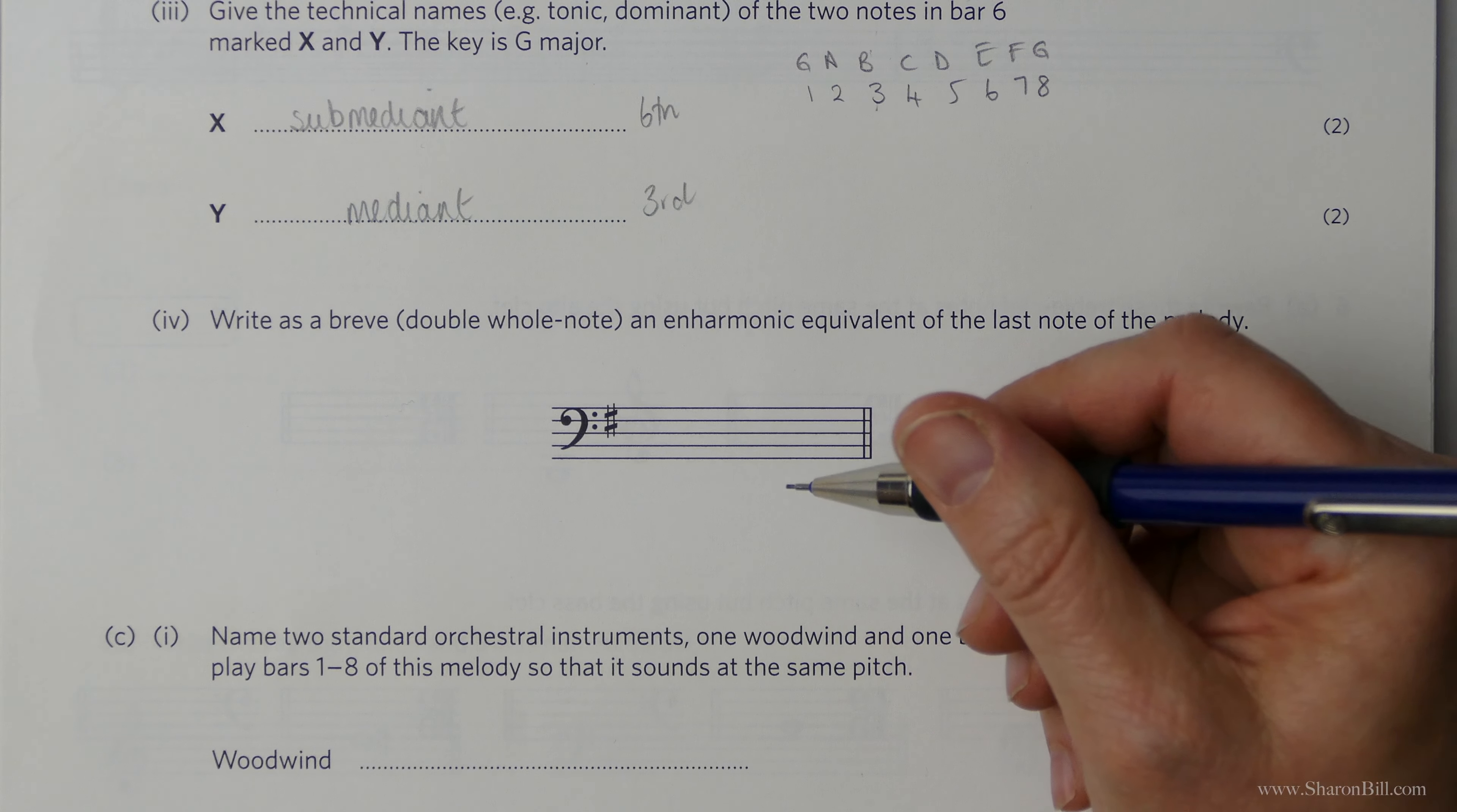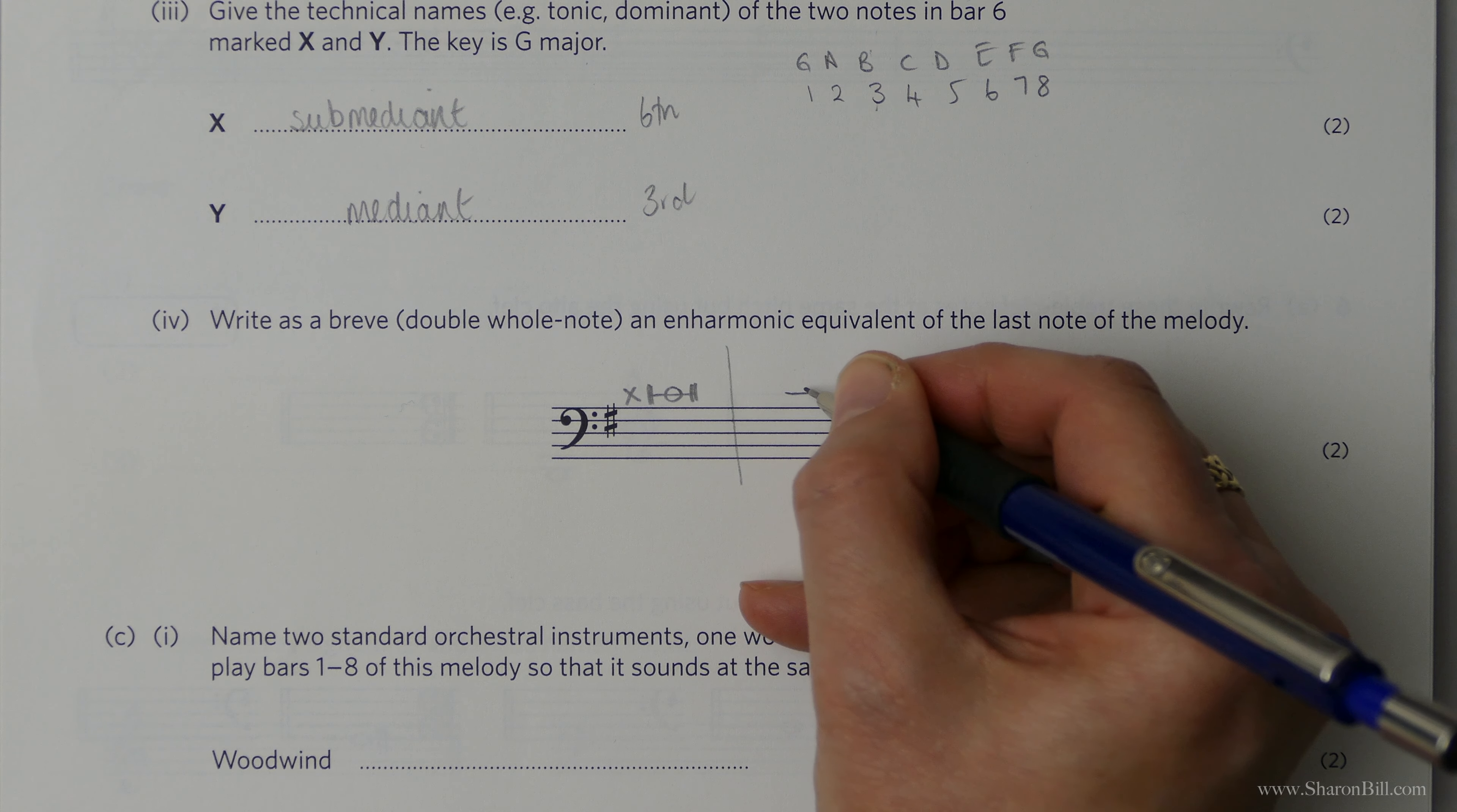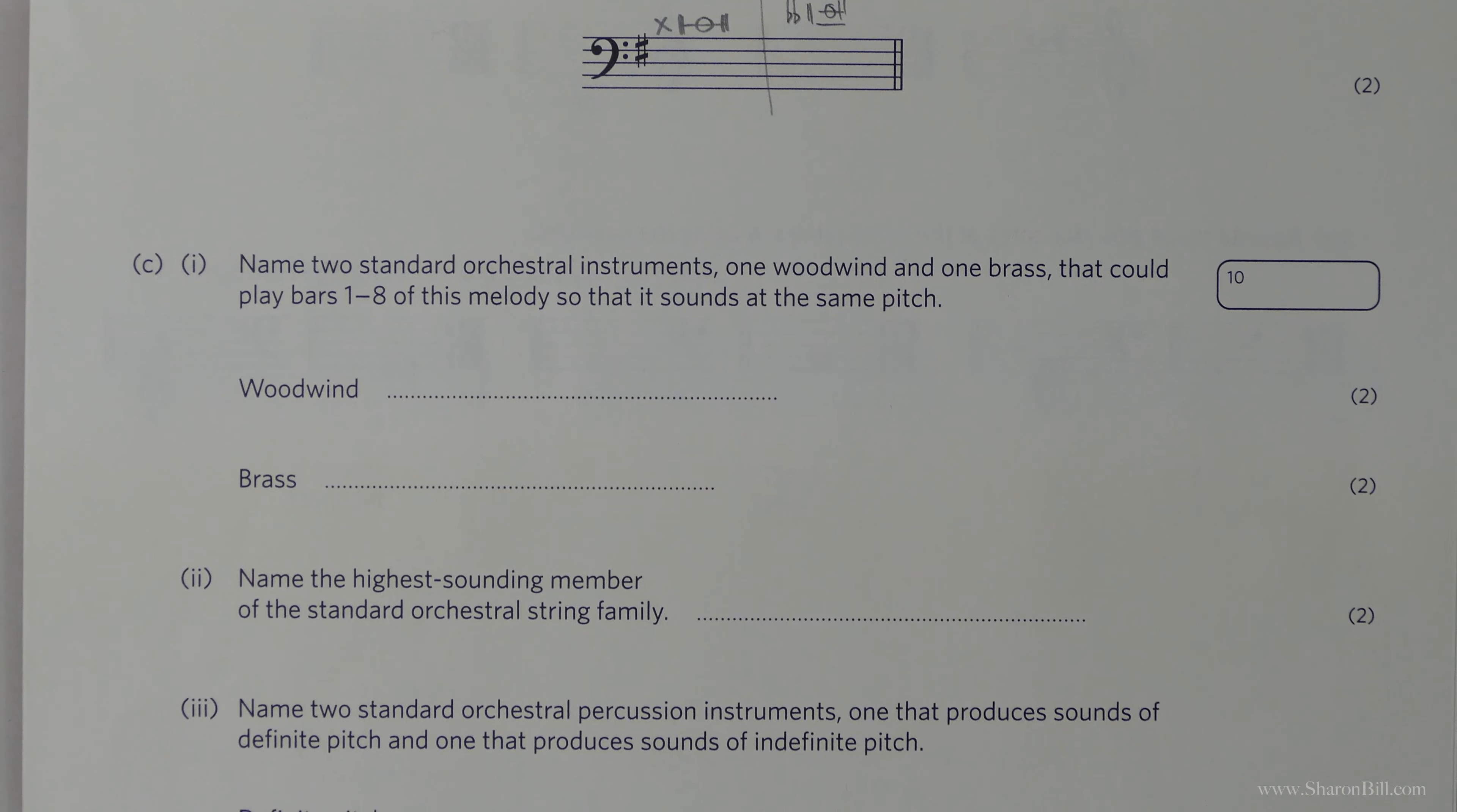So you could write E double flat, so let's do that. So we're above middle C, so C double sharp will be middle C, as a double whole note, a breve, so that's C double sharp, or alternatively going higher to the E above that, and that's a double flat. So either one of those will do.